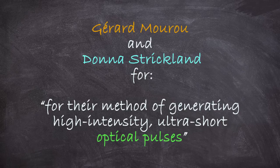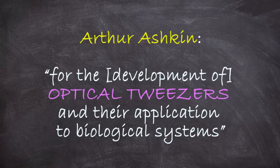The first half was given to Gerard Moreau and Donna Strickland for their method of generating high-intensity ultra-short optical pulses, and the second half was given to Arthur Ashkin for developing what are called optical tweezers. Today we want to focus on the second part of the prize and figure out what exactly are optical tweezers.